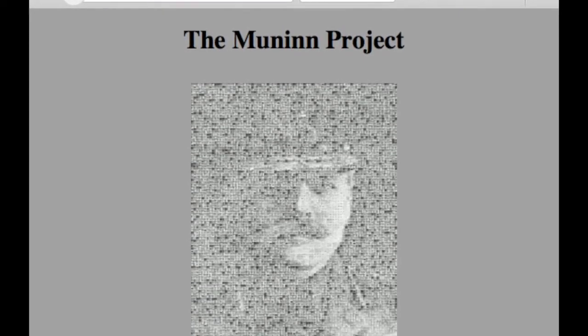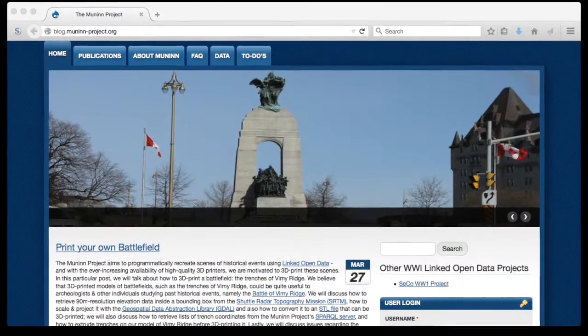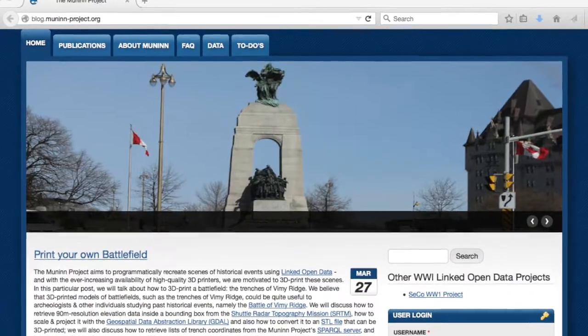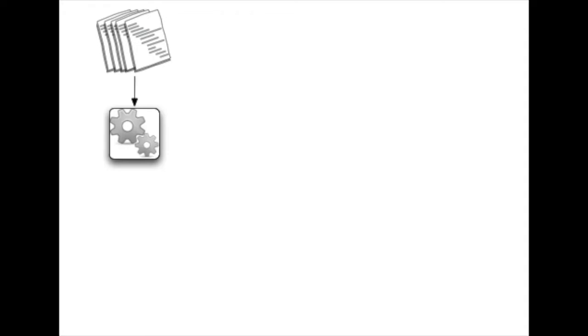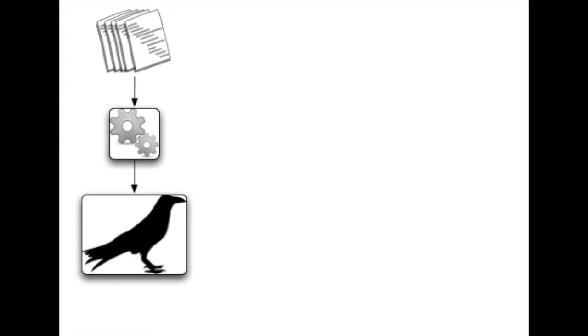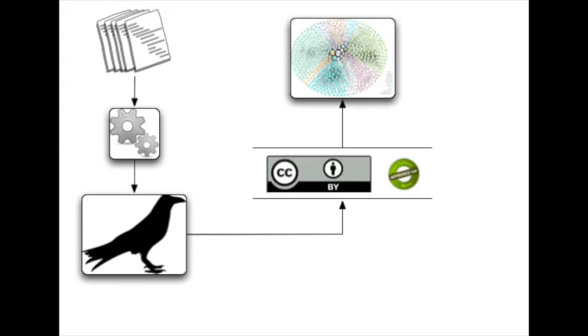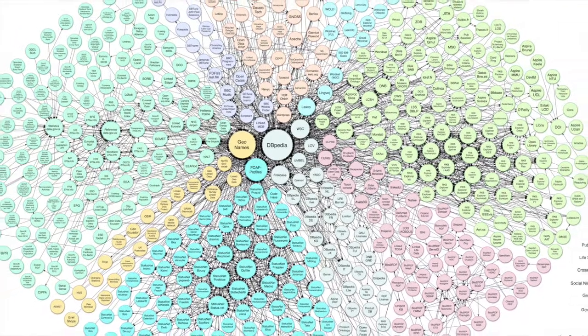The Munin Project is an academic research project creating linked open data from First World War archive, library and museum sources. The aim is to take digitized documents, extract the data using computing power and turn that information into structured linked open data, published under a Creative Commons license as part of the linked open data cloud.